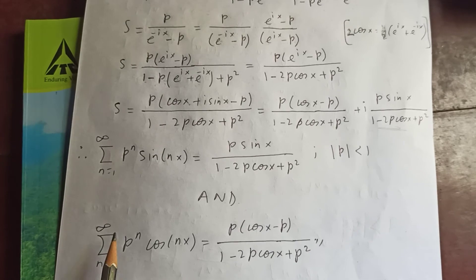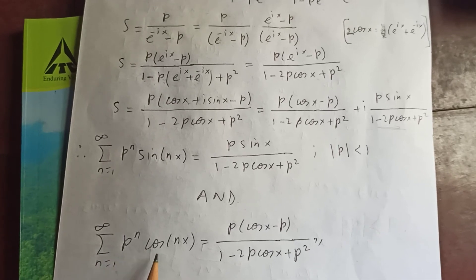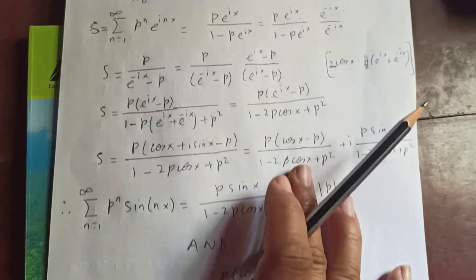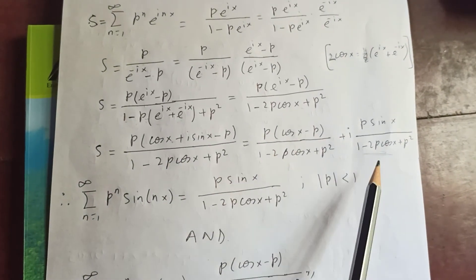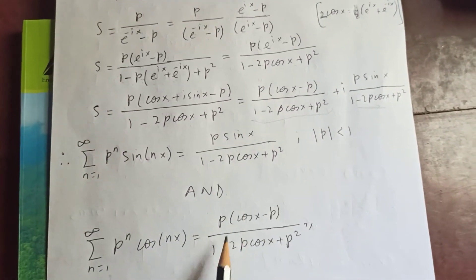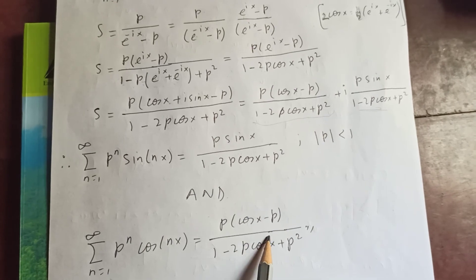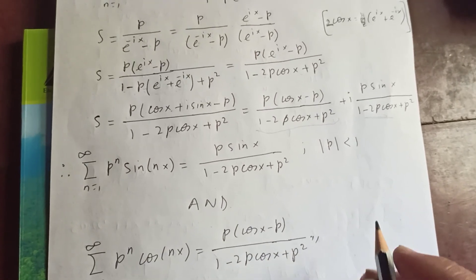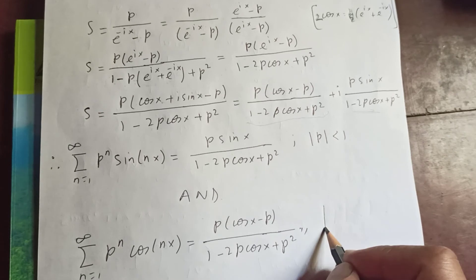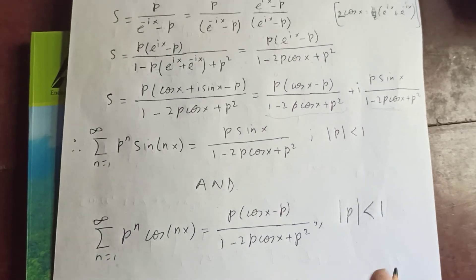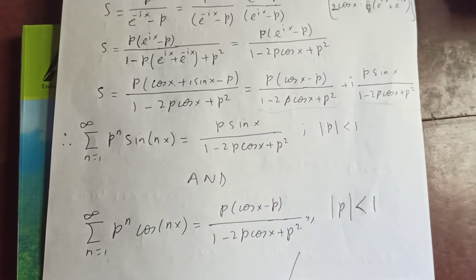We can also get the cosine result: the sum from n=1 to infinity of p^n · cos(nx) equals the real part, which is (p·cos(x) − p) / (1 − 2p·cos(x) + p²). Note that for both results, the modulus of p must be less than 1. And that is our proof.